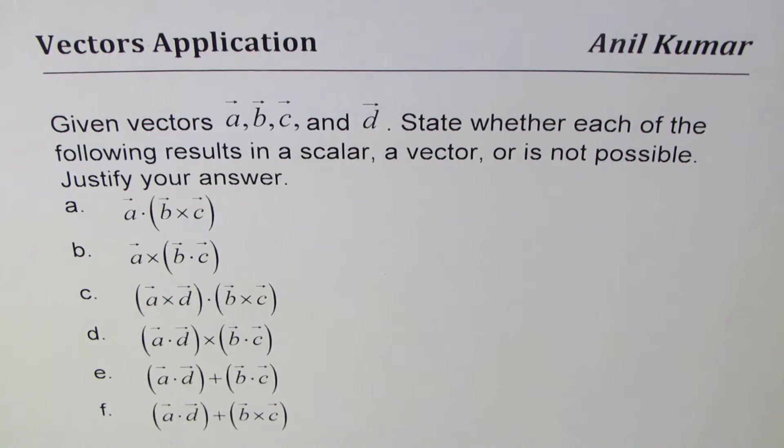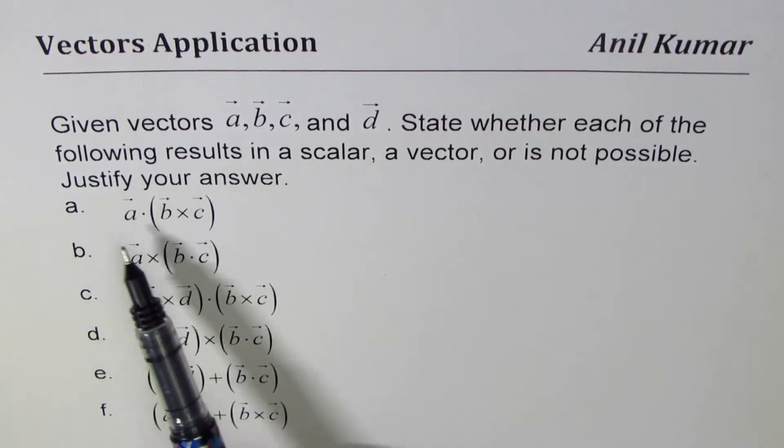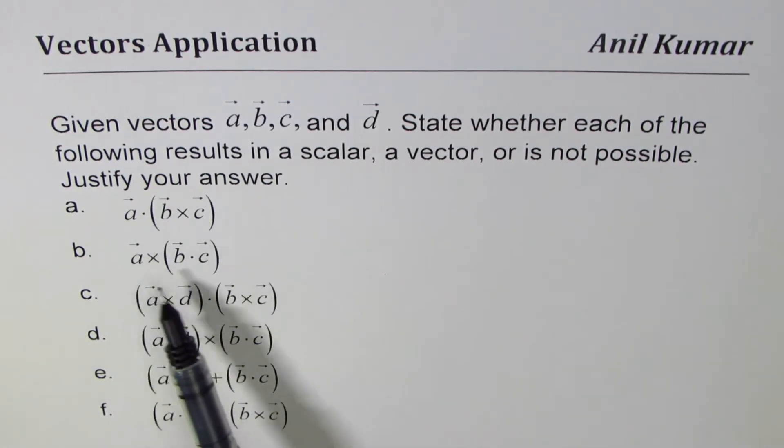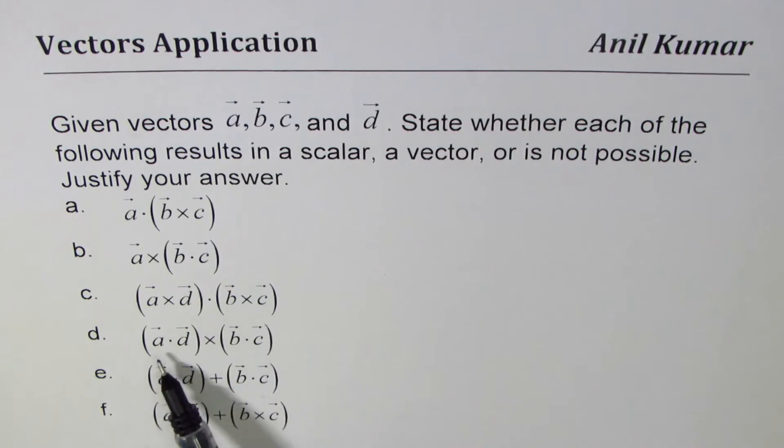Justify your answer. So given many combinations here for dot and cross product, the first one is a·(b×c), then we have a×(b·c), (a×d)·(b×c), (a·d)×(b·c).